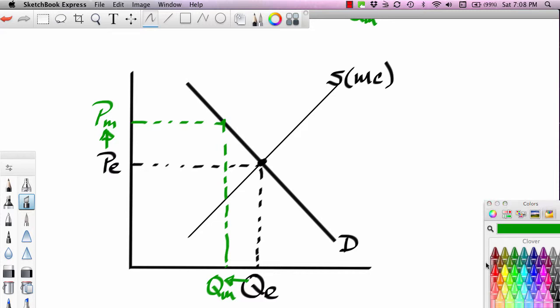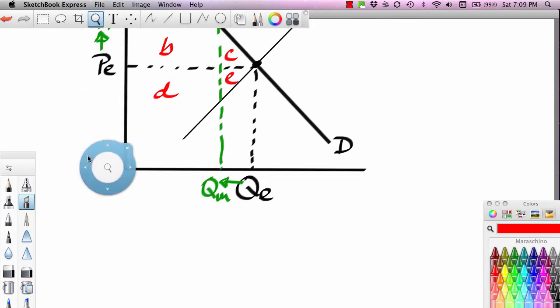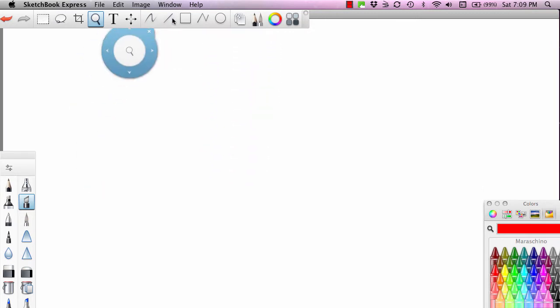Now, let's go ahead and use consumer, producer, and societal surplus modeling to investigate the welfare effects of this. So I'm going to label this area A, this B, this C, this D, and this E. And we're going to scroll down. And I'm going to set up a table.